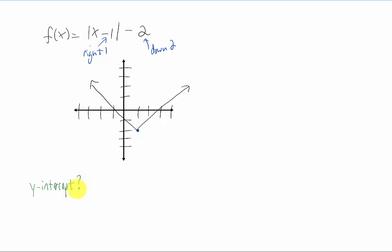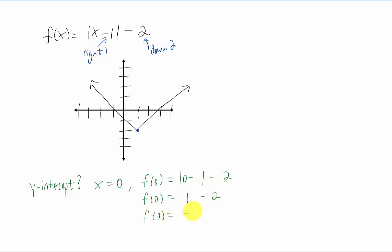We're always concerned with the Y intercept of a function, as it gives us more information about what the graph looks like. To find the Y intercept, plug in X equals zero: F(0) = |0 − 1| − 2 = |−1| − 2 = 1 − 2 = −1. So our Y intercept is the point (0, −1), and the graph came pretty close to that.